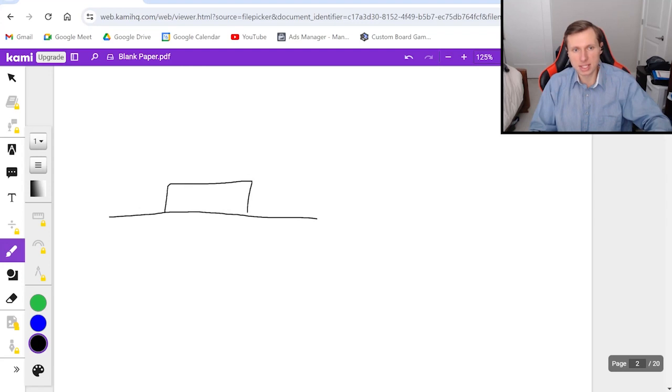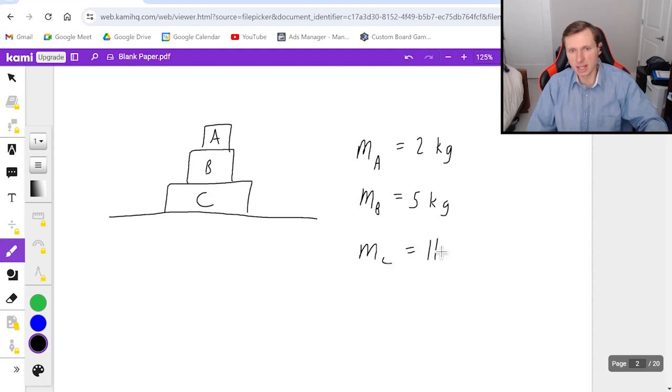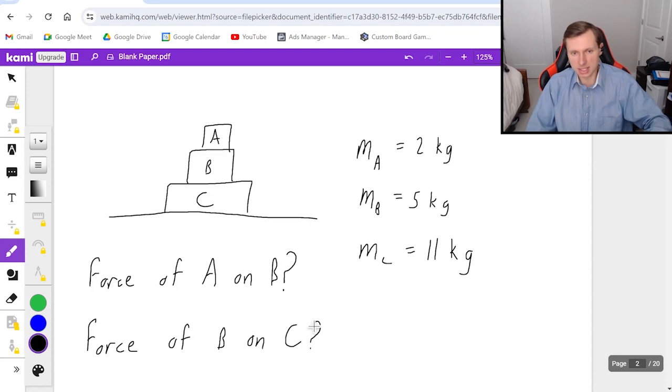I have three boxes stacked on top of each other like this. Box A, box B, and box C. I'm going to say the mass of box A is 2 kg, the mass of box B is 5 kg, and the mass of box C is 11 kg. And my question is going to be, what is the force of box A on box B? And then I'm going to ask for the force of box B on box C? And that's the question, so how do I do this?